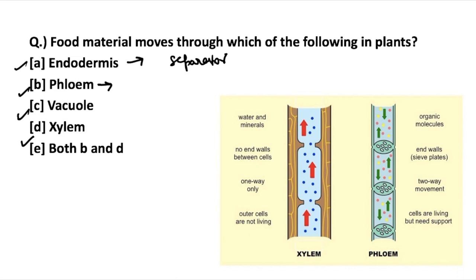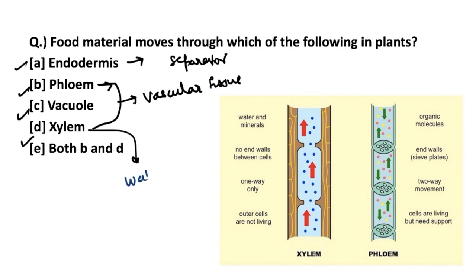Next is phloem. Xylem and phloem are the two vascular tissues of plants. Xylem is majorly responsible for transportation of water and keeping the plant hydrated. Phloem is responsible for transportation of food materials and nutrients. Another key difference: phloem is bidirectional, moving both up and downward, whereas xylem is unidirectional and moves only upward. So the answer is that food material moves through the phloem throughout the plant.